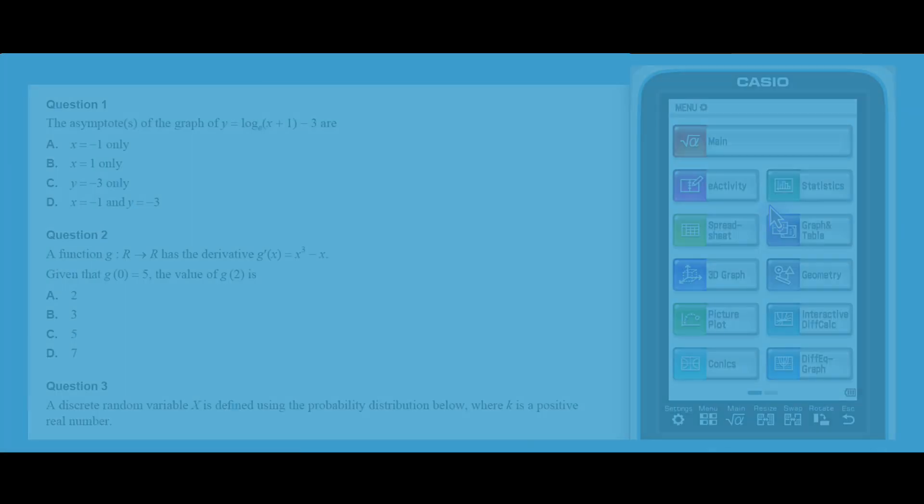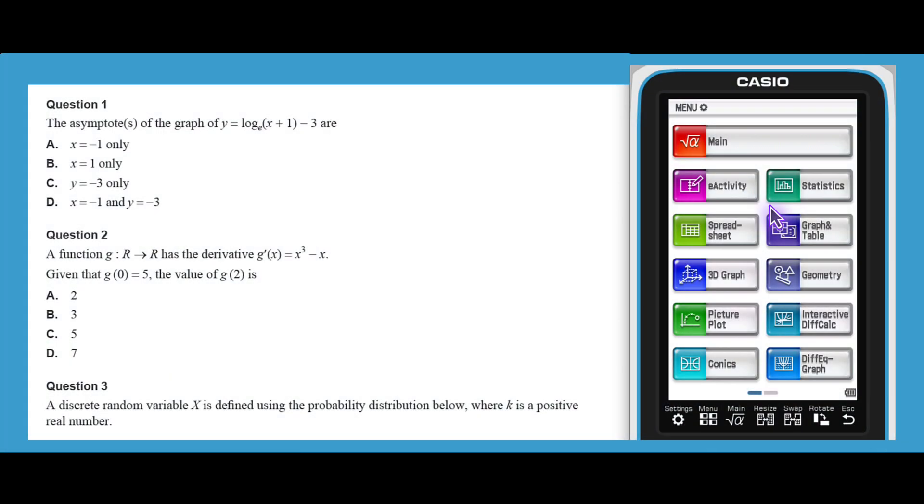Question 1 asks about the asymptotes of the graph of this logarithmic function, which is a translation of the graph of y equals natural log x. If the graph of the natural log function is familiar to you, then you will know that it has no horizontal asymptotes and has a vertical asymptote with equation x equals 0.